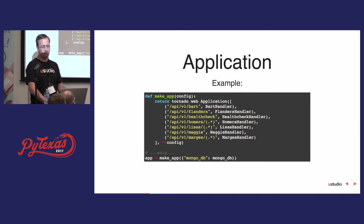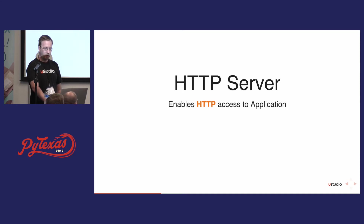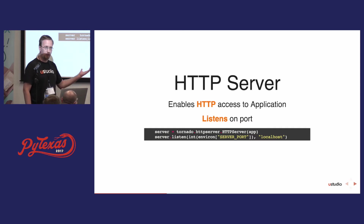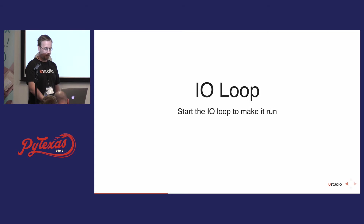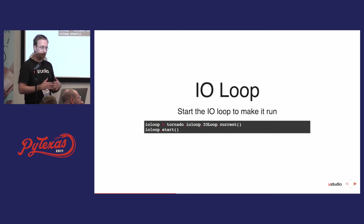In this example, I'm passing in my Mongo database connection. Now we have an application, but we need a way to talk to it, and we do that by creating a server. An HTTP server enables HTTP access to your application and listens on a port. You pass in your application object and call listen with the port number, optionally passing in a local host. But the server won't actually accept connections until we start the IO loop — that's what makes it go. You get the current IO loop from Tornado, call start on it, and that's generally the last thing in your main.